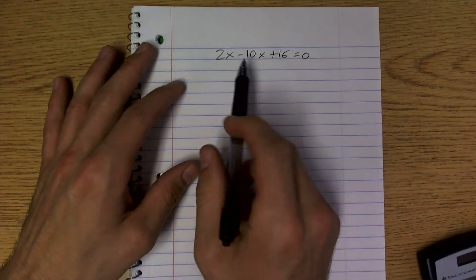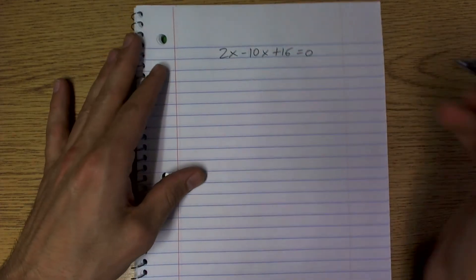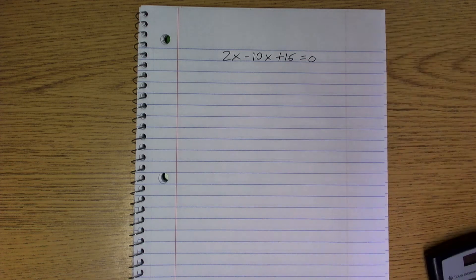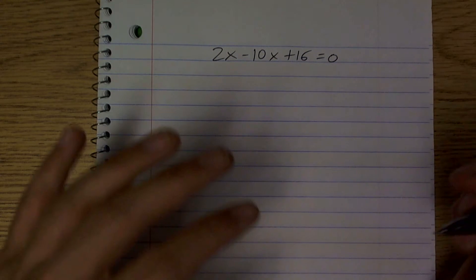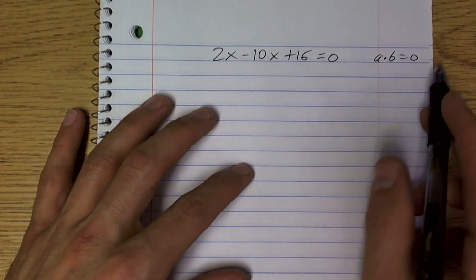I'll put them up there. So you have 2x² - 10x + 16 = 0. So remember, to solve for this, we've got to put it in the zero product property. We've got to factor this so we can get a times b equals 0, something times something equals 0. So we've got to factor this.